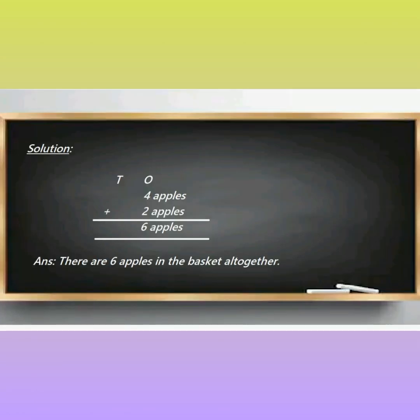We will write down the solution like this way. First, you have to write solution. Then, ones. After that, we will write down four apples in the ones place. Then, addition sign. Again, two apples in the place of ones as per the information given in the story. So students, four plus two, how much? Four plus two is six. So, we are having six apples altogether in the basket.